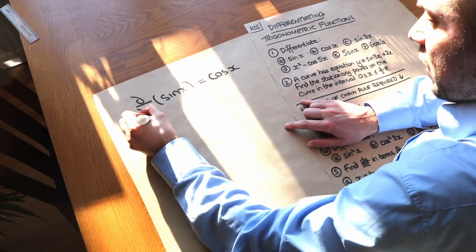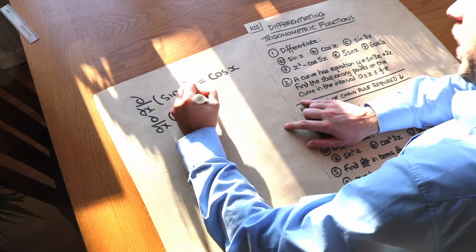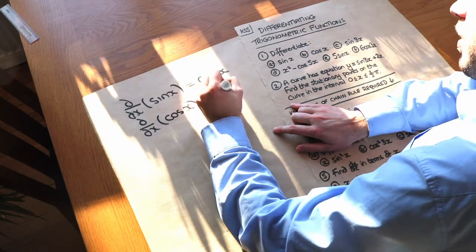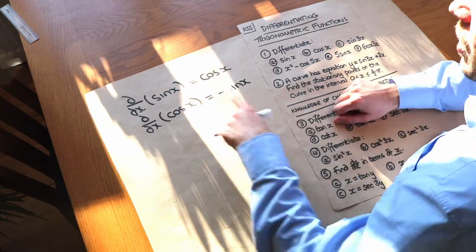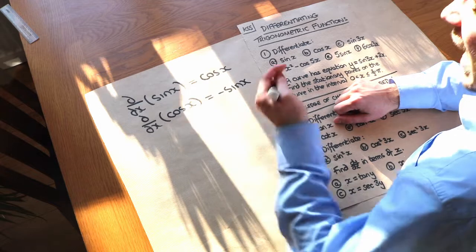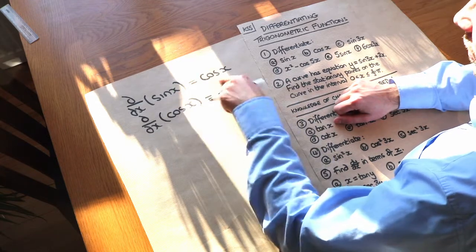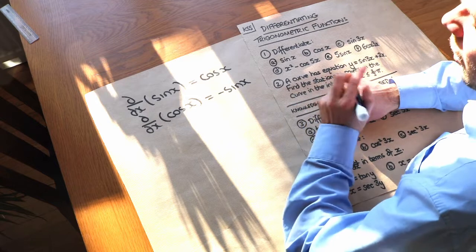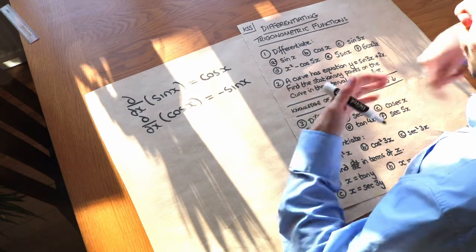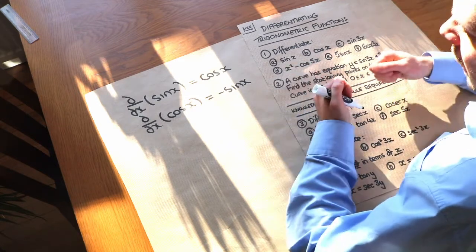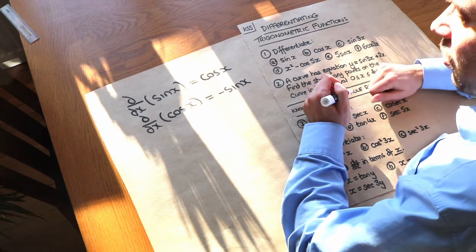When we differentiate cos of x, we get minus sine of x. I should point out that x has to be in radians for sine of x to differentiate to cos of x — it doesn't work if you're in degrees. So when we're doing anything in calculus, we're always assuming that any angle is in radians and not in degrees.